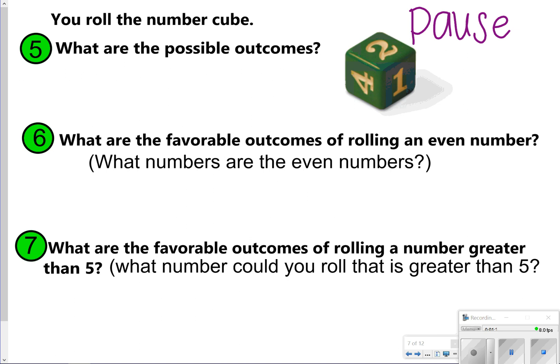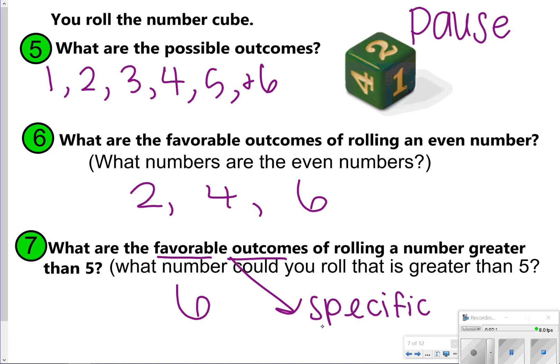So in number five, you're supposed to list the possible outcomes. So on this number cube, your outcomes possibly are 1, 2, 3, 4, 5, and 6. For number six, what are the favorable outcomes of rolling an even number? And this means you list the specific even numbers. So 2, 4, and 6 are your favorable outcomes of rolling an even number. For number seven, what are the favorable outcomes of rolling a number greater than 5? And again, you're going to list the numbers that are greater than 5. There's only one number greater than 5, and that's the number 6. So whenever you see favorable outcomes, you need to think specific, and then you're going to be listing what it is.